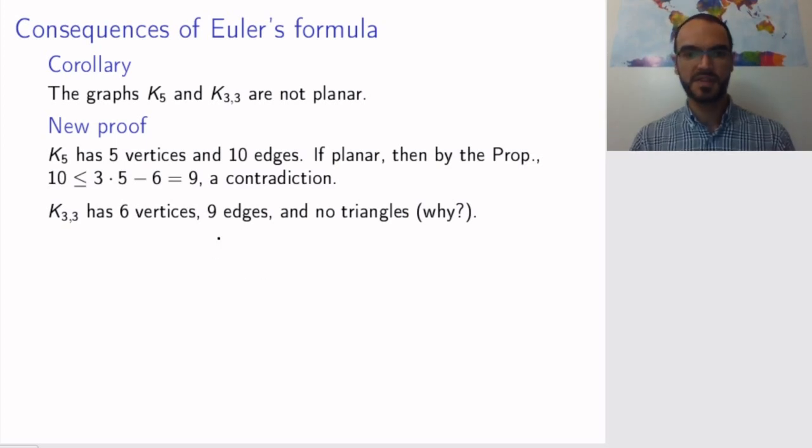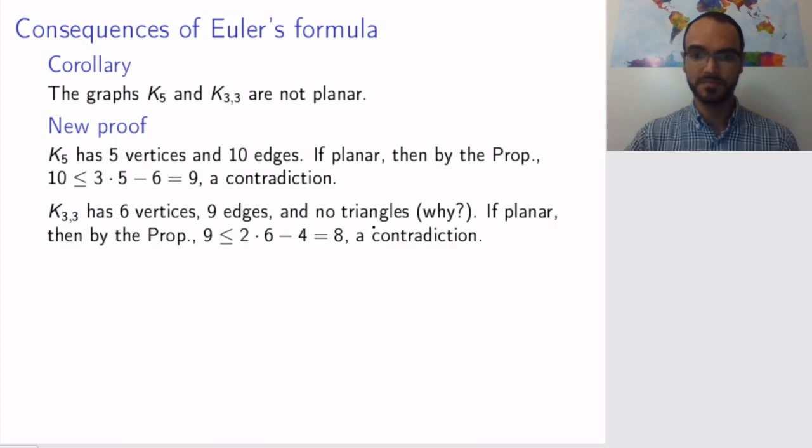K33 has 6 vertices and 9 edges, and it has no triangles. Pause and think why that is. The reason is, it is a bipartite graph, and bipartite graphs have only cycles of even length. So a triangle is a cycle of length 3, which is odd. So again, if planar, now we can use the triangle-free version of the previous proposition, which said that m is at most 2n minus 4, and then now instead we get that 9 is smaller than or equal to 8, which is obviously a contradiction. So these graphs are not planar. Now we have a new proof for that, and we get new insights.